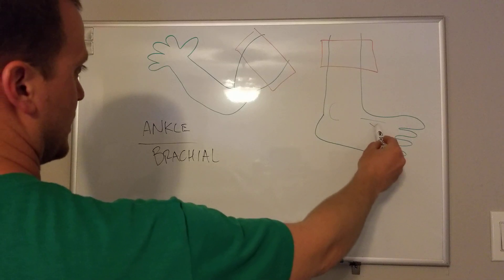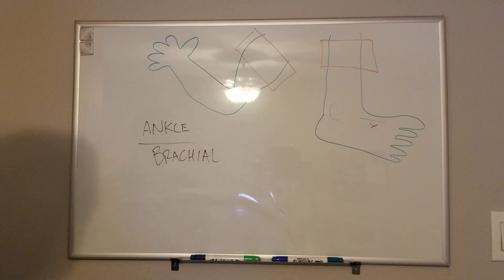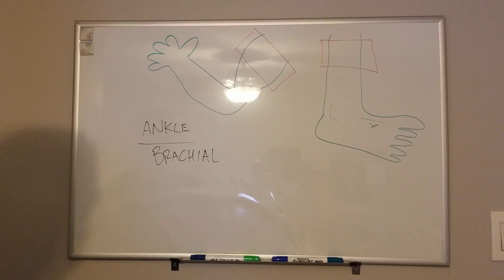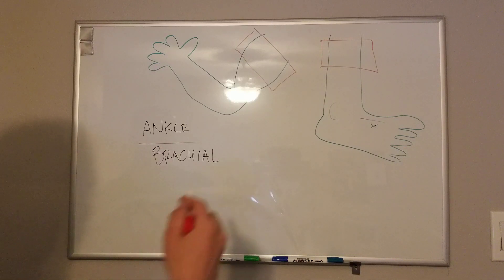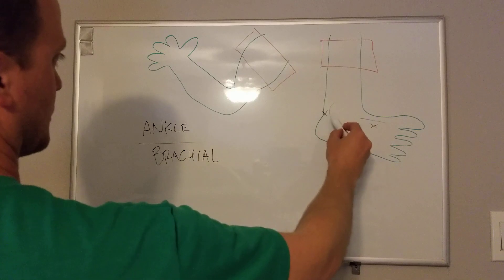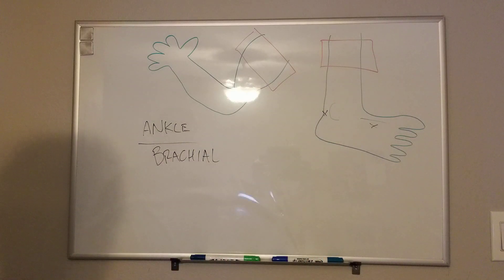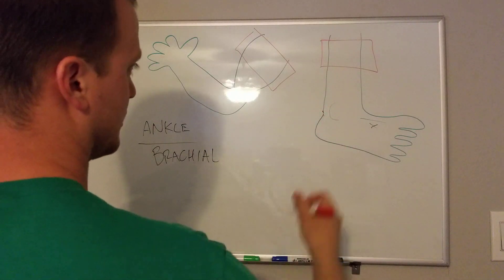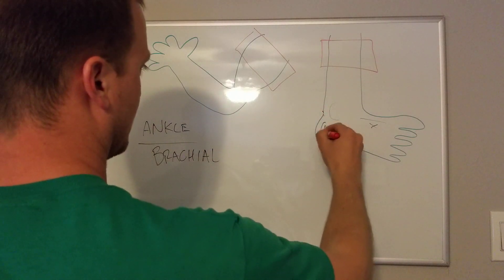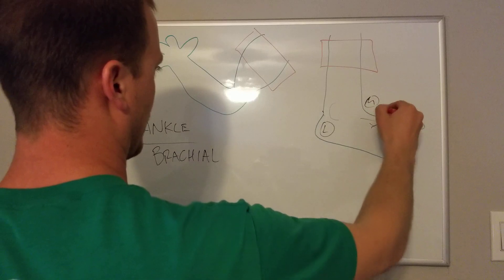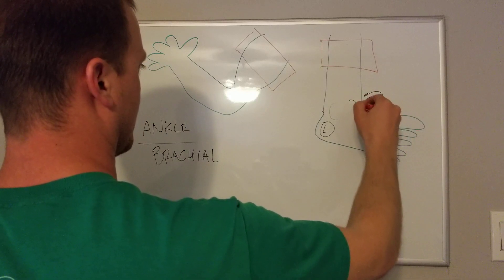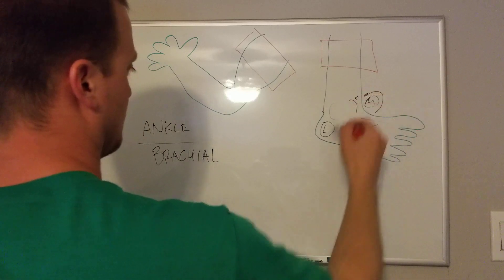That would be your dorsalis pedis, or DP, found over the arch of your foot, lateral to the big tendon of your first toe. And then your posterior tibial artery, which is behind your medial malleolus. This would actually be on the medial side of the foot, around the back behind the medial malleolus. Sorry, I drew that poorly.